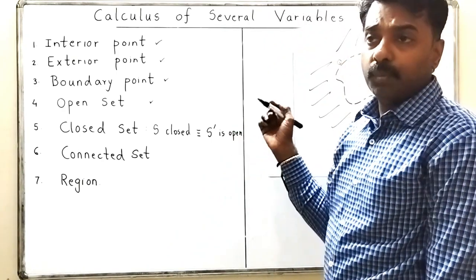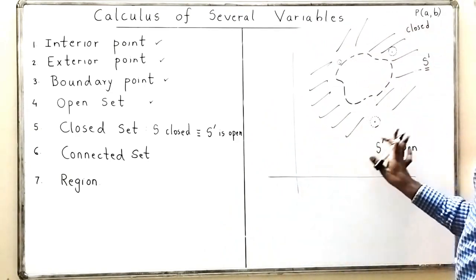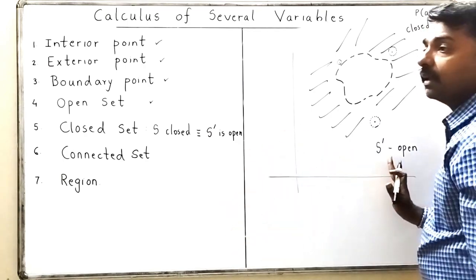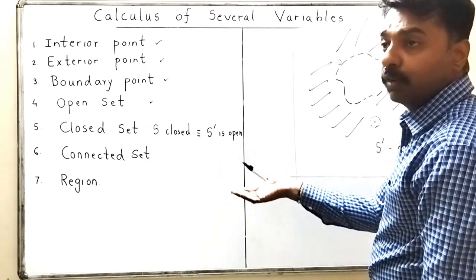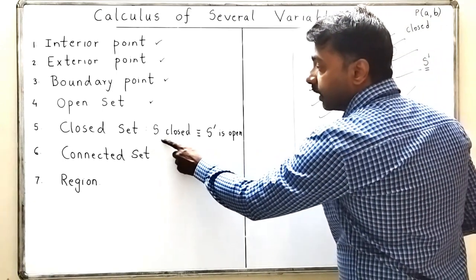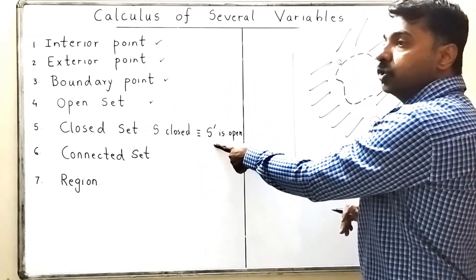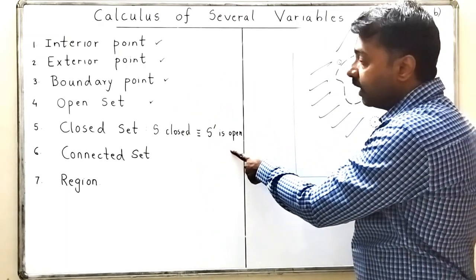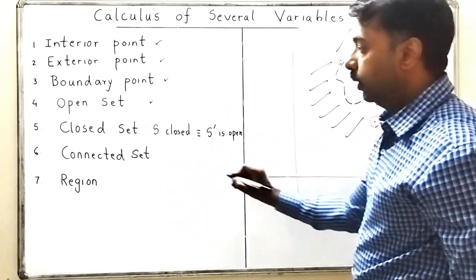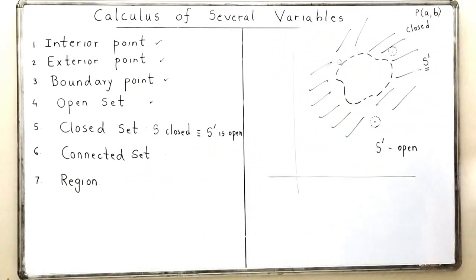Whenever we come across problems related to this, we will re-discuss it. So when will I say a set is closed? I will go to its complement and check that it is an open set. If that is so, the set S will be called a closed set. I hope the notion of closed set is clear.